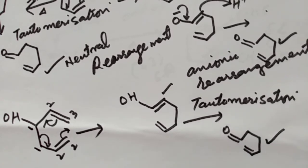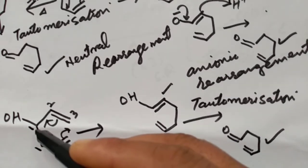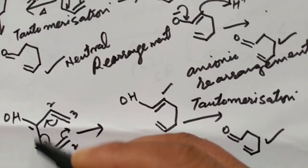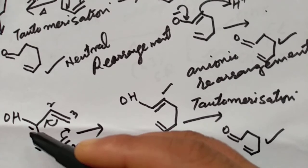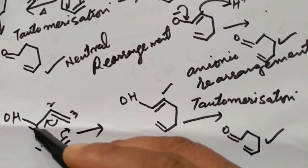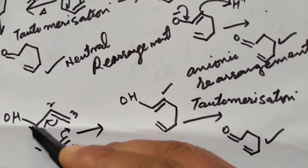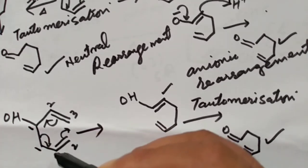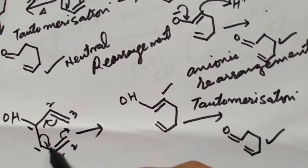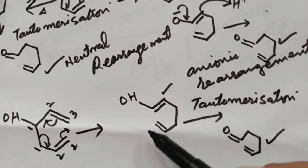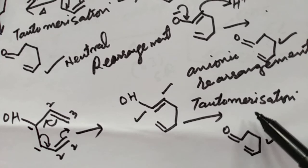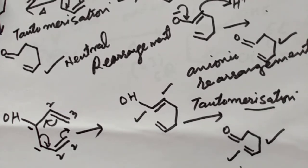To repeat: we start numbering from both ends of the old sigma bond — this side and this side. This bond shifts to this side, this one shifts to this side, and this one shifts to this side. We get this compound, which on tautomerization gives the final product. That was all about oxy-cope rearrangement, thank you for watching.